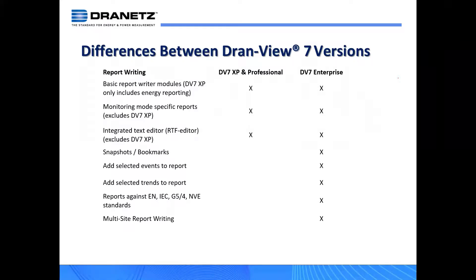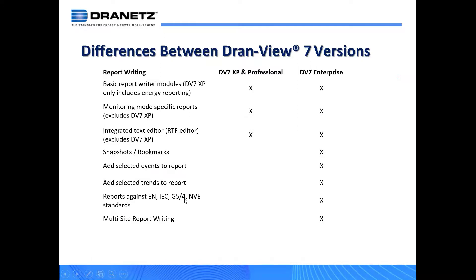Every version of DranVue has report writing capabilities. DranVue Enterprise adds additional capabilities beyond those available in Pro. All versions have the basic report writer module — you can customize reports for different monitoring modes. They all have an integrated text editor, with the exception of DranVue 7 XP, which lets you put content in RTF or Word format. Enterprise adds additional features like snapshots, bookmarks, event selections, custom reports, G54 (a UK report), NVE standards, Chinese standards, and multi-site reporting.